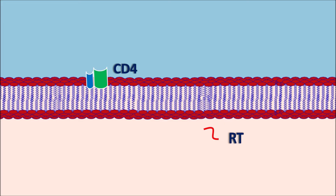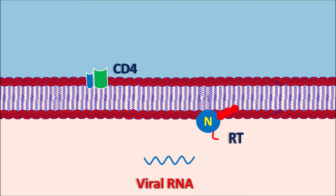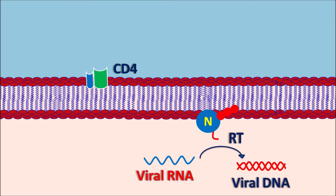The reverse transcriptase enzyme produces a reverse transcription, converting viral RNA into viral DNA. To prepare a DNA copy from RNA, it requires nucleosides. These nucleosides undergo phosphorylation to form a triphosphate form and can bind to the reverse transcriptase enzyme. In this way, each nucleoside interacts with the reverse transcriptase enzyme, enabling preparation of a slowly growing DNA copy from the viral RNA.